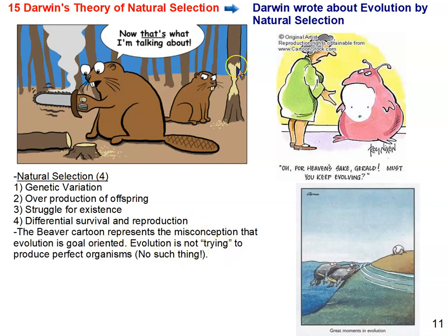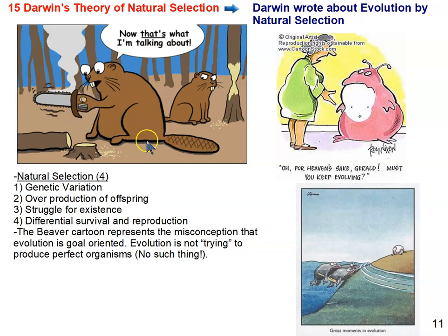The beaver cartoon represents a misconception: the idea that evolution is goal-oriented, that evolution wants to create a beaver perfectly adapted for cutting down trees. If that were true, beavers would have chainsaws, since that's the best way to cut down a tree. That can't happen because evolution tinkers with the old to make the new — evolution can only change what it has to work with, which is the genetic variation that's already there. It can only tinker with that genetic variation to make new varieties.